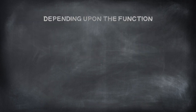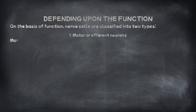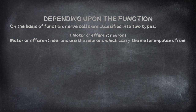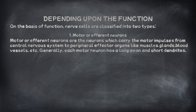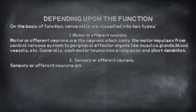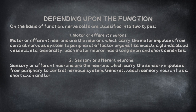On the basis of function, nerve cells are classified into two types. 1. Motor or efferent neurons carry motor impulses from the central nervous system to peripheral effector organs like muscles, glands, and blood vessels. Generally, each motor neuron has a long axon and short dendrites. 2. Sensory or afferent neurons carry sensory impulses from the periphery to the central nervous system. Generally, each sensory neuron has a short axon and long dendrites.